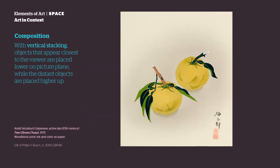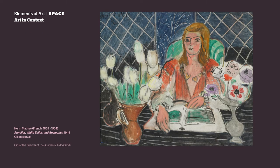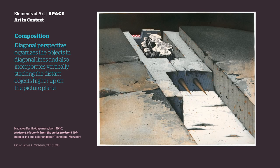Composition. With vertical stacking, objects that appear closest to the viewer are placed lower on the picture plane, while the distant objects are placed higher up. Diagonal perspective organizes the objects in diagonal lines and also incorporates vertical stacking.